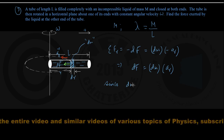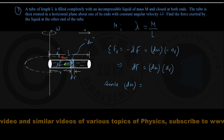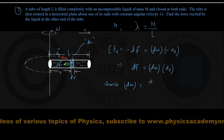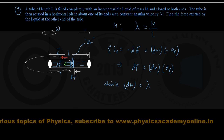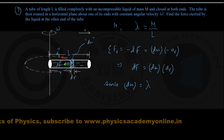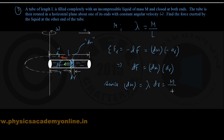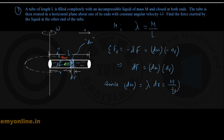DM, the mass of the element, is the linear mass density of liquid lambda into the length of the element DR. Lambda has already been written as total mass M divided by the length of the tube L. So DM equals M·DR/L.